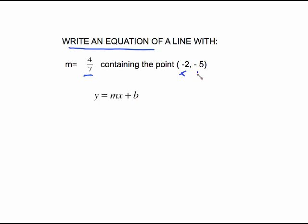When you see the directions write an equation of a line, you should immediately think y equals mx plus b, and you're going to plug this information into this equation. This is x and this is y. So I just have to put negative 5 in for y. m is 4/7, x is negative 2. You might want to write it as negative 2 over 1.